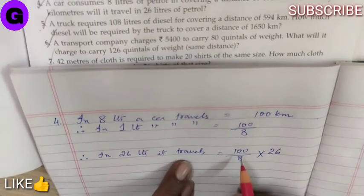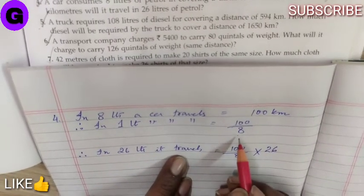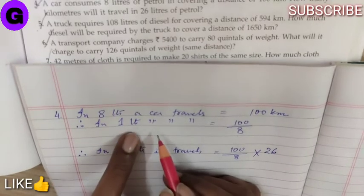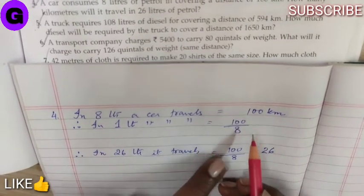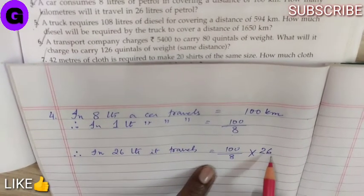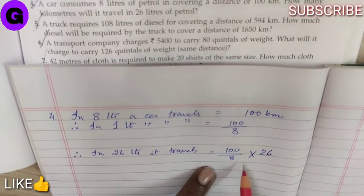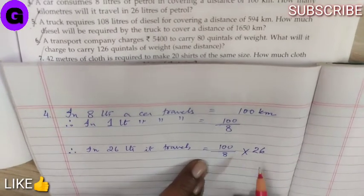Now, let me explain you once again. 100 by 8 is the value of 1 litre. We can reduce it here itself or we can write this value here and multiply. The answer will be the same.